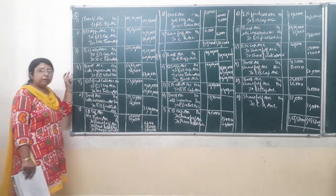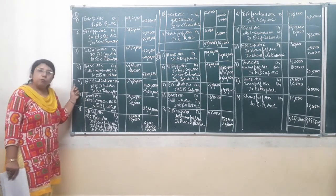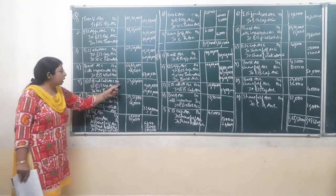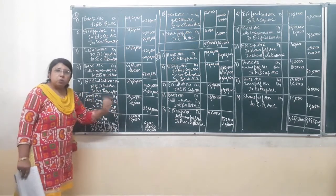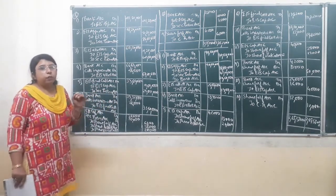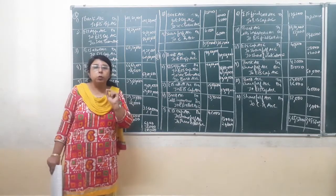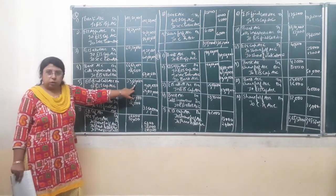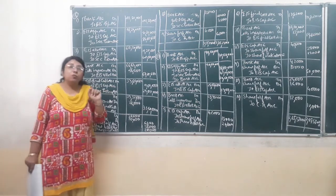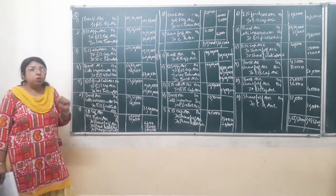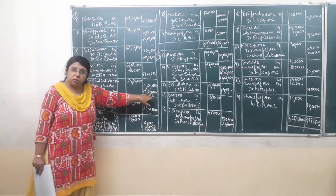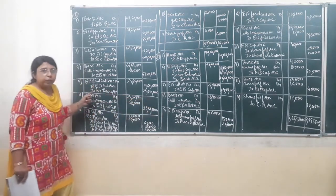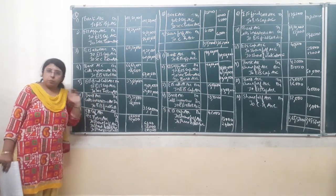Now moving to the next step, that is the final call. First the amount of final call will be due: equity share final call account is debited to equity share capital account and securities premium account. The total final call per share is Rs. 14 including premium. So 2,40,000 multiplied by Rs. 14 gives Rs. 33,60,000. Out of that, equity share capital account is credited for 2,40,000 multiplied by Rs. 4, giving Rs. 9,60,000. And 2,40,000 multiplied by Rs. 10 for premium gives Rs. 24 lakhs, credited to securities premium account.